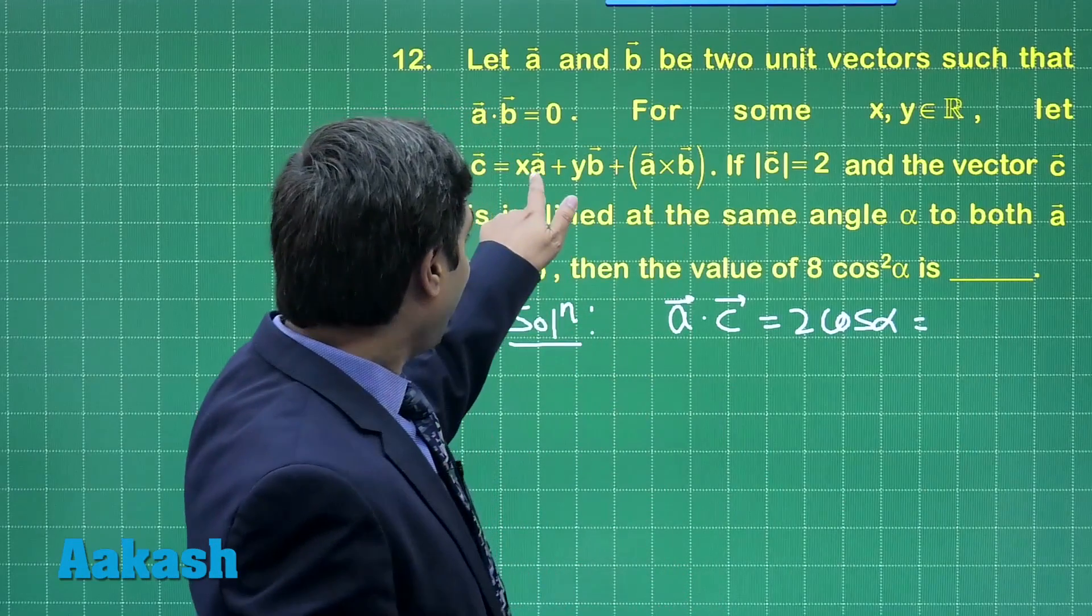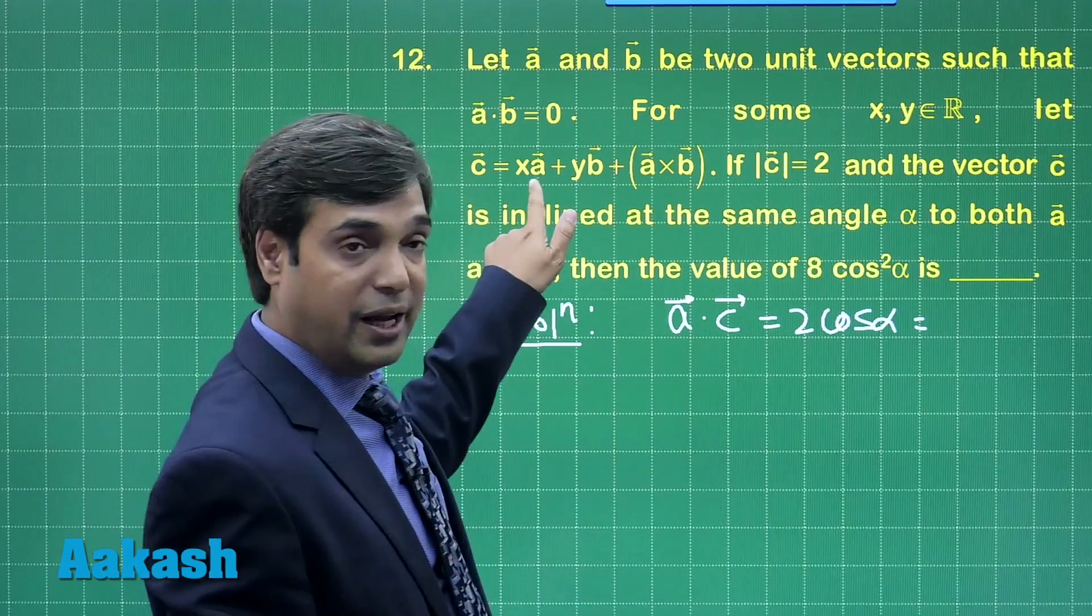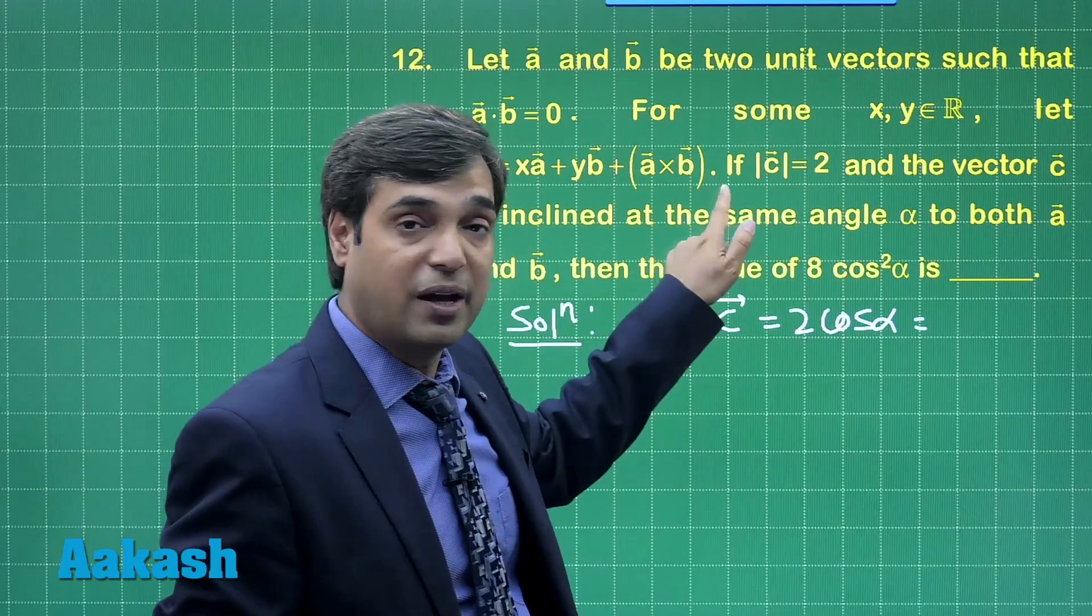This is equal to, on the right side, we see x a dot a, that is 1, and rest two terms are 0. So this is equal to x.